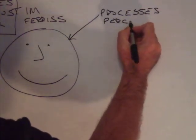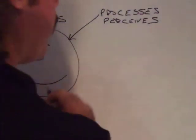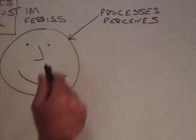I before E, except after E, before I, except after I. So, how does Tim process and perceive the world? Now, let's check this out.